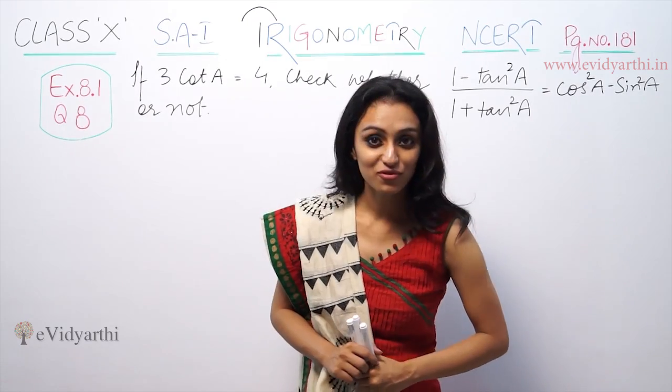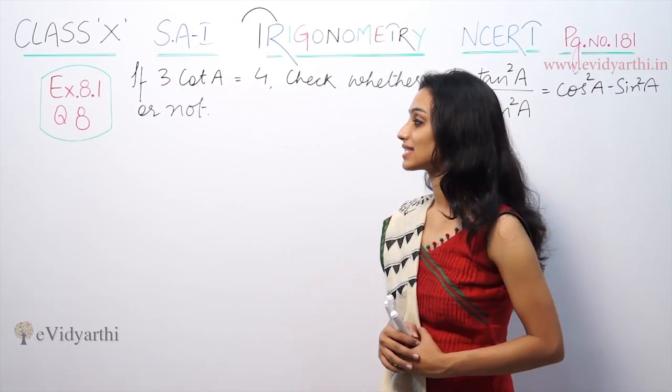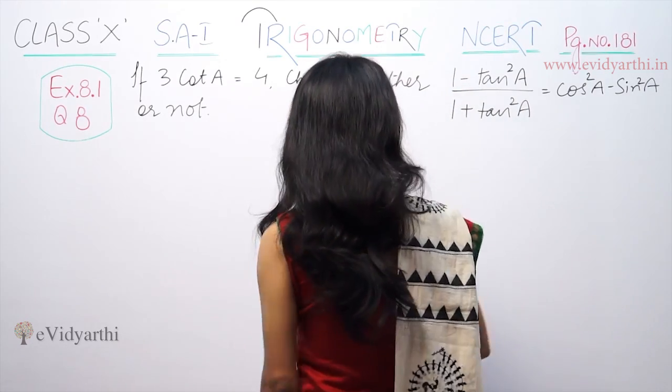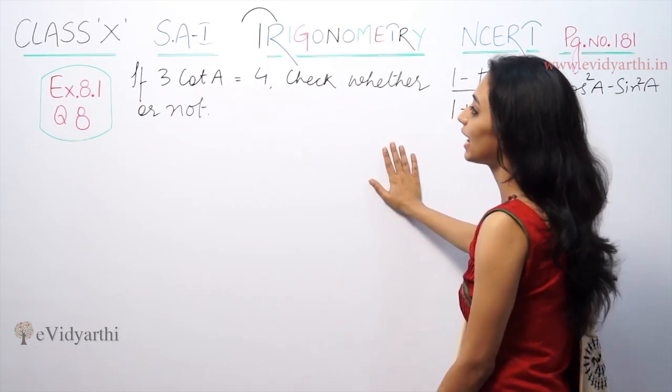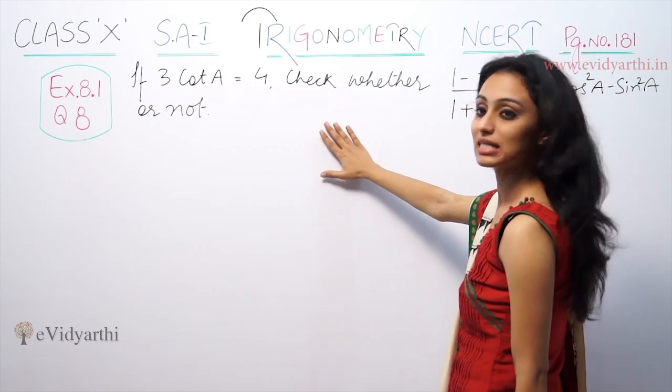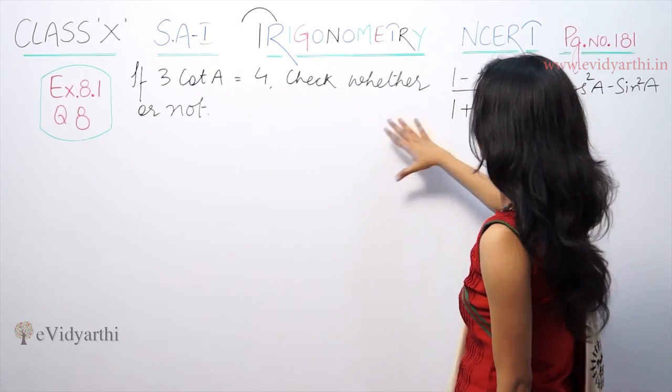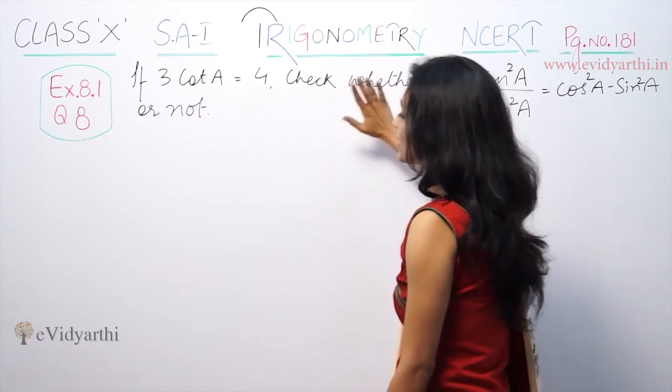Hi, this is Kushbu with another question of trigonometry. This is question number 8, exercise 8.1, page number 180 of NCERT. If 3 cot A is equal to 4, check whether this is equal to this or not.